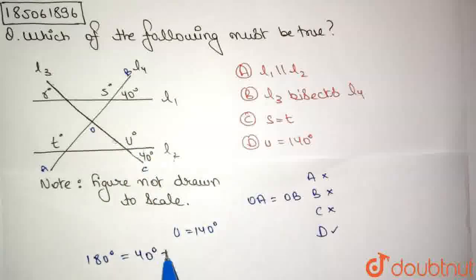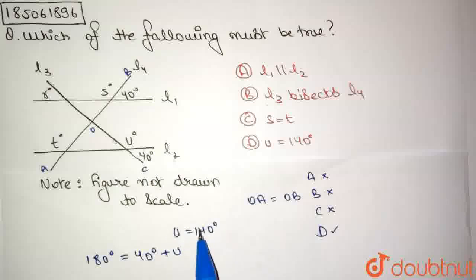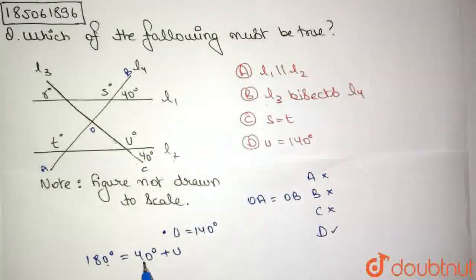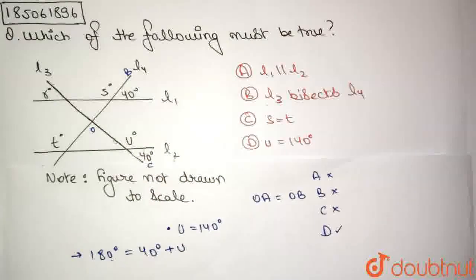So 40 degrees plus U. 140 degrees is the value of U given to us in the option. We need to keep this in mind. Here, we have 180 degrees, which is the total sum of angles to the right side of OC, equal to 40 degrees plus U. Now, if I subtract 40 degrees from both sides, I am going to subtract 40 degrees from both sides.